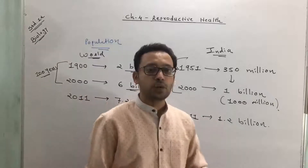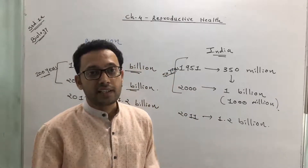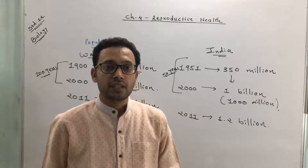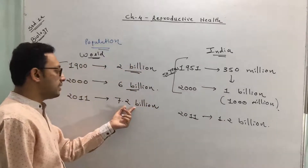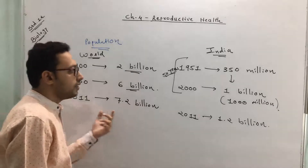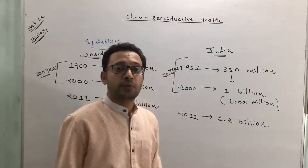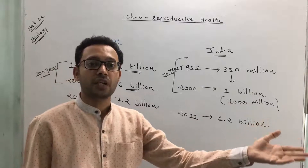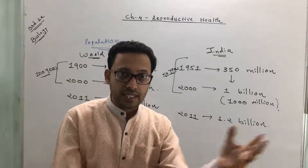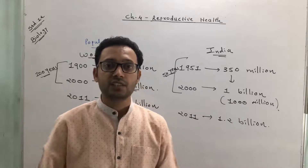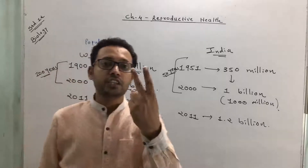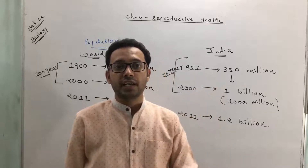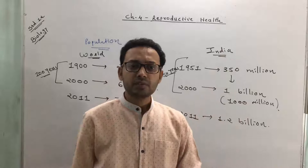In 2011, India's population increased to 1.2 billion, and currently it is more than 1.35 billion. From the world's 7.2 billion, 1.2 billion is in India alone, and another 1.2 billion is in China. Combined, India and China hold half of the world's population, making it a very big challenge to slow the population growth rate.